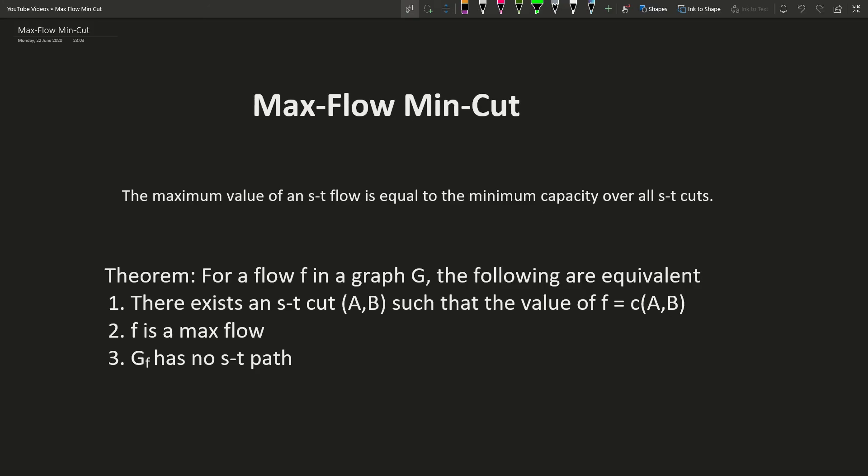We have also shown that all flows are bounded above by all cuts, and that if F is a max flow, we can find a cut with capacity equal to the value of the max flow. As no cut may have smaller capacity than any flow, this cut must also be the minimum cut, which is what the max flow min cut theorem states.